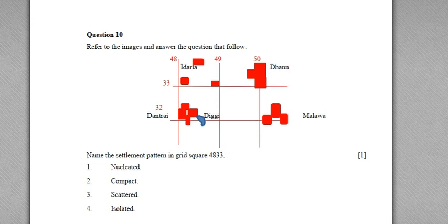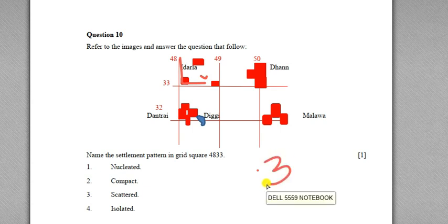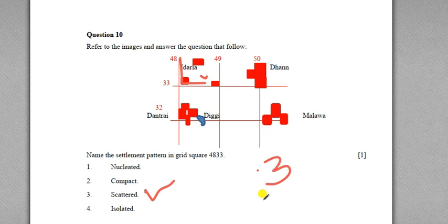The final question from the topographic section: name the settlement pattern in grid square 4833. Use the same method to find the grid square — easting 48 on the left and northing 33 at the bottom. There are three types of settlement pattern: nucleated, scattered, and linear. In this grid square, the settlement named Idrala has houses located far away from each other, unlike the others where houses are close together. Such a pattern is called scattered or dispersed settlement. Note that nucleated and compact are the same; isolated refers to a single house far from a settlement and is not a separate settlement pattern.